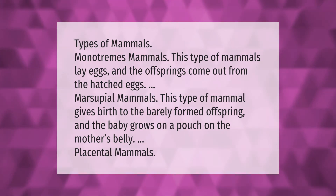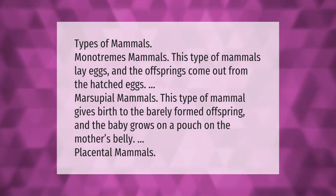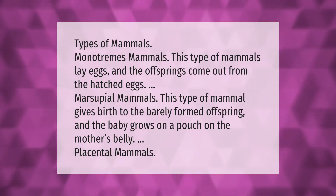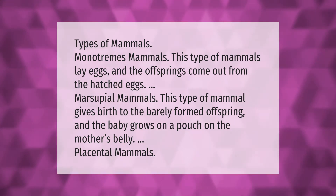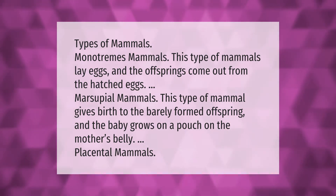Types of mammals: Monotremes — this type of mammal lays eggs and the offspring come out from the hatched eggs. Marsupial mammals — this type of mammal gives birth to barely formed offspring and the baby grows in a pouch on the mother's belly. Placental mammals.